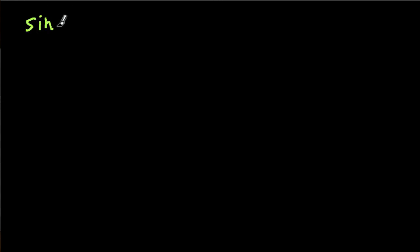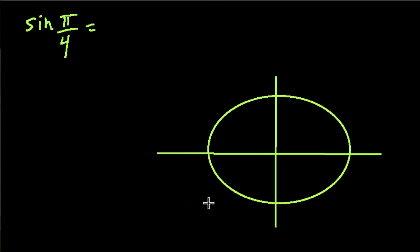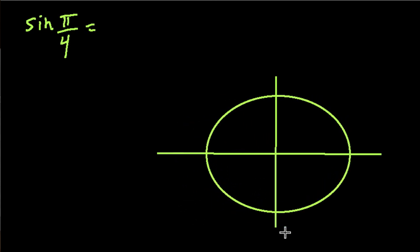So the sine of π over 4, which is 45 degrees, we want to know what does that equal. One thing you could do to solve this is just set up your unit circle. I could plug this into a trig table or a calculator, but using the unit circle is going to help us understand the arc sine.